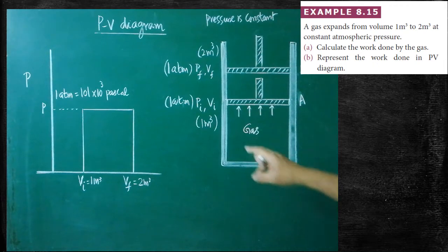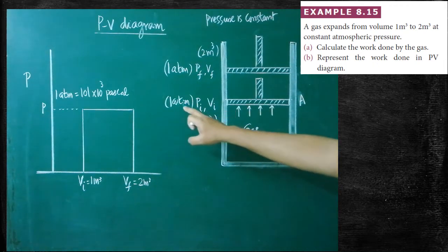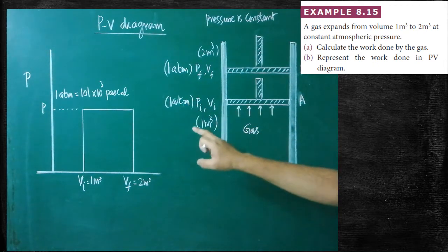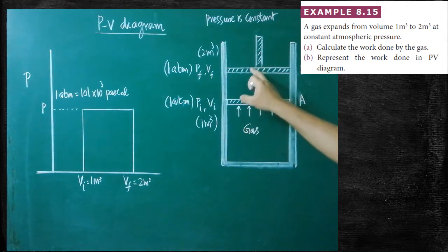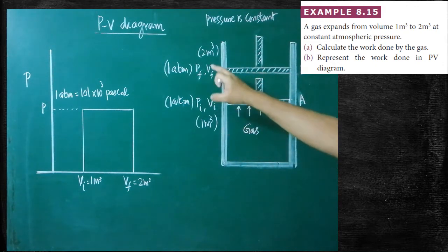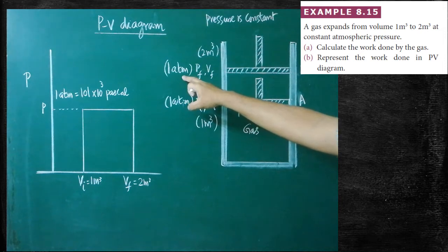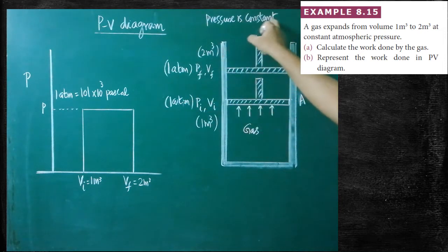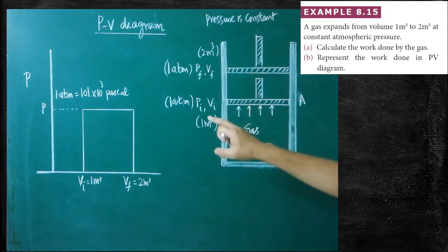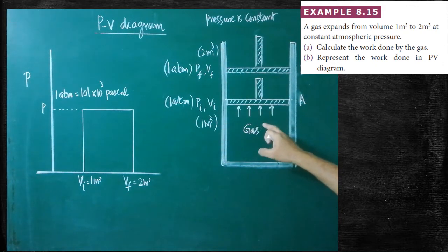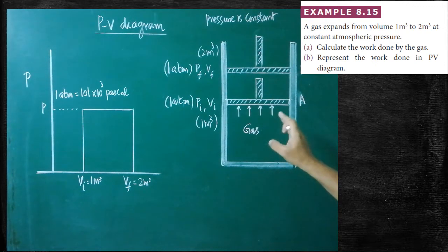The initial pressure of the gas is 1 atmosphere — that is Pi. The gas is expanded, but even after the expansion, the pressure is not changing. The same constant pressure is maintained. But volume is changing from 1 meter cube to 2 meter cube. So now the gas does some work, and the work done by the gas should be calculated.